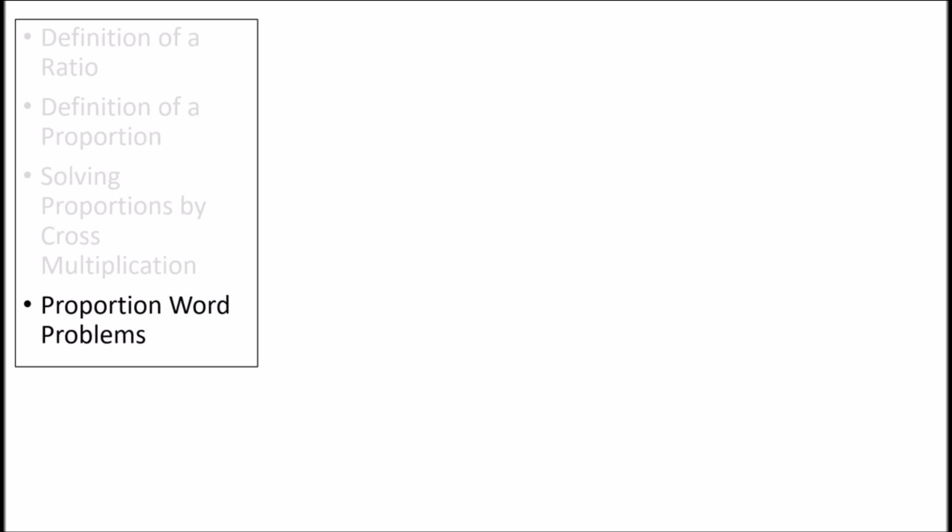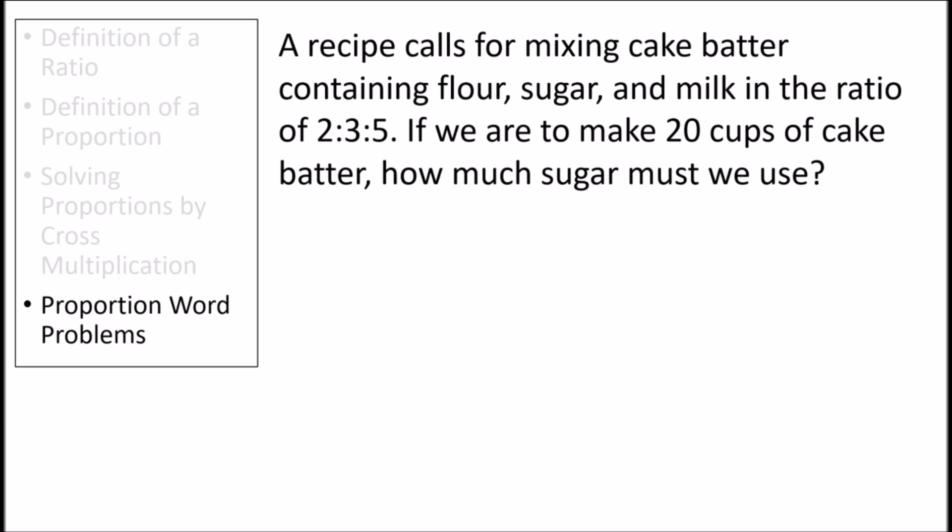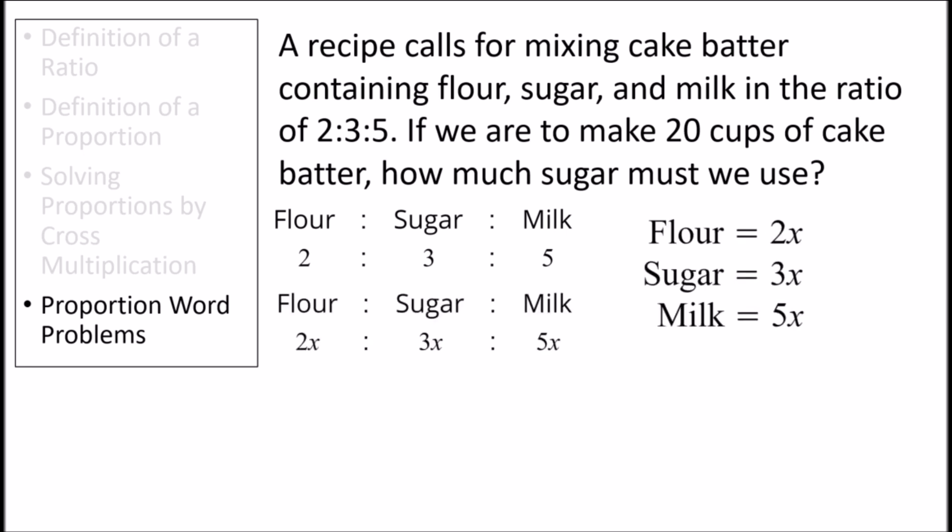Let's try some word problems involving proportions now. Here we have a recipe for cake batter. It requires us to use flour, sugar, and milk in the ratio of 2 to 3 to 5. To solve this question, we do need to introduce a variable, which we'll arbitrarily choose to be x. So here we have the amount of flour is 2x cups, the amount of sugar 3x cups, and the amount of milk 5x cups.